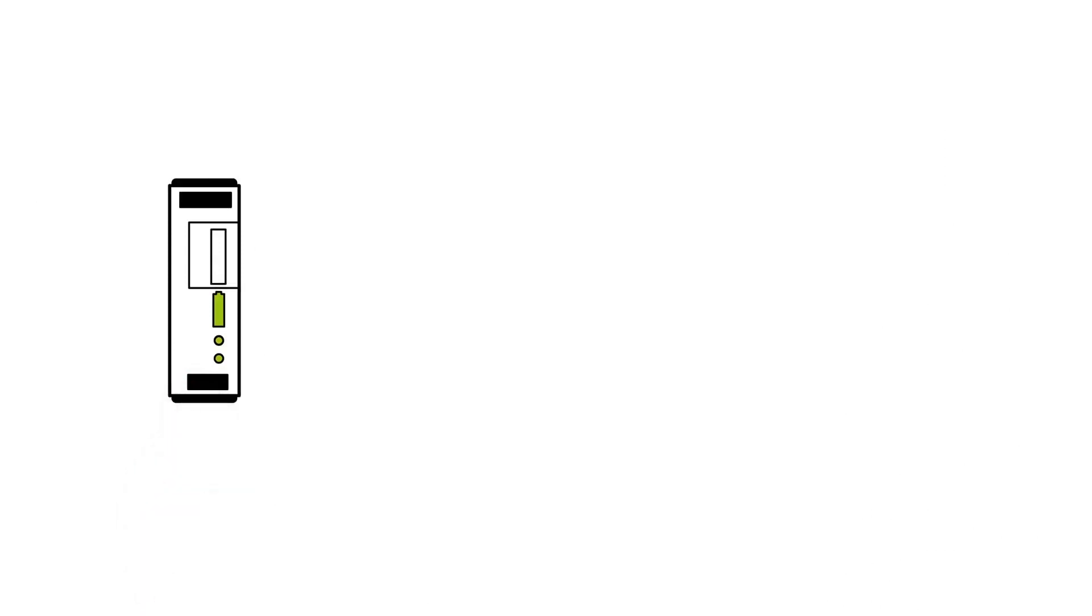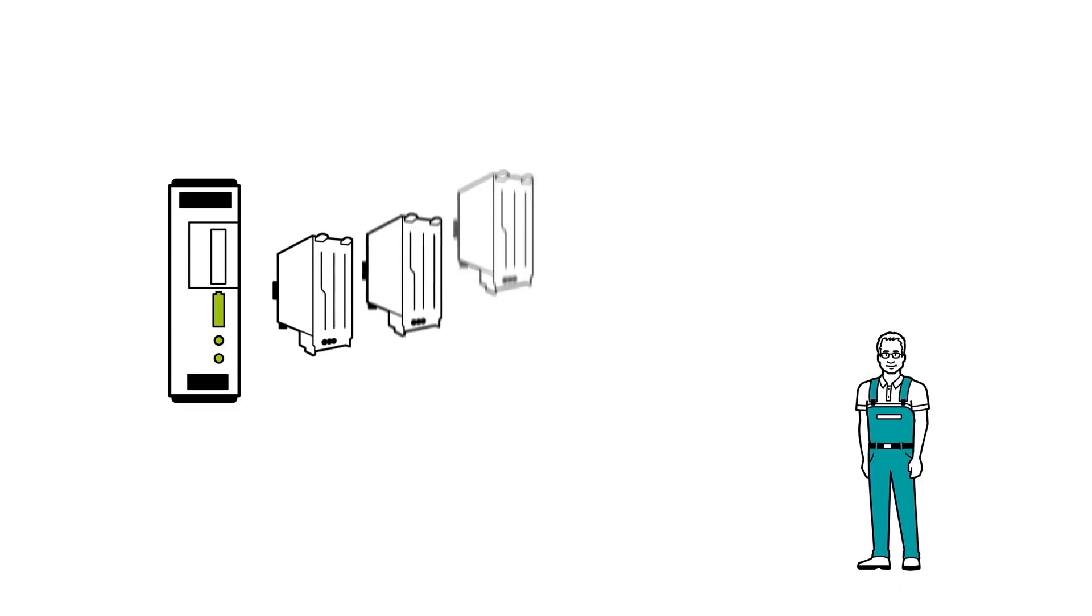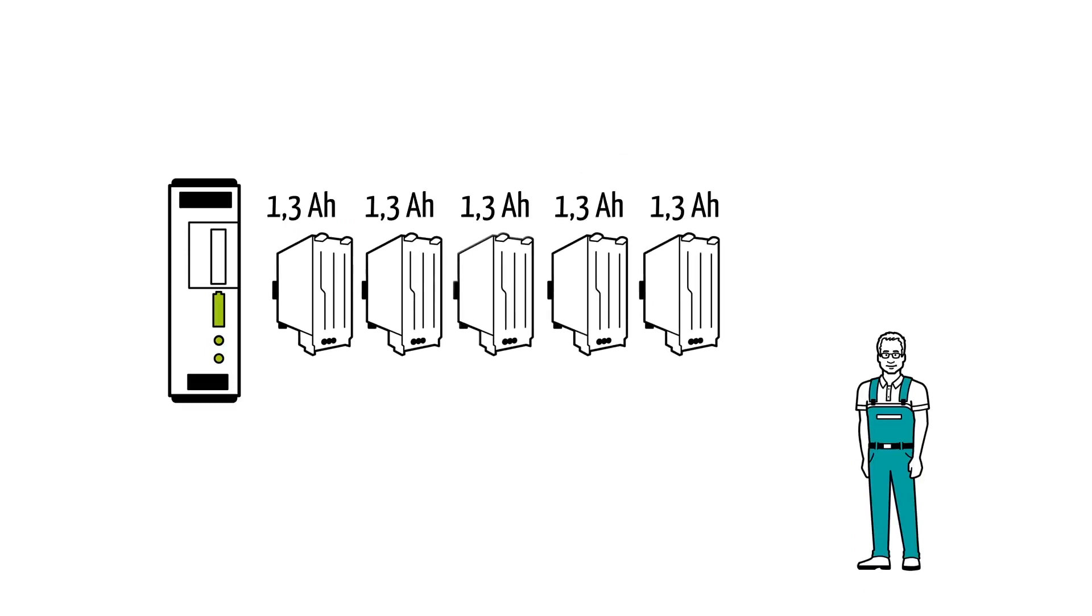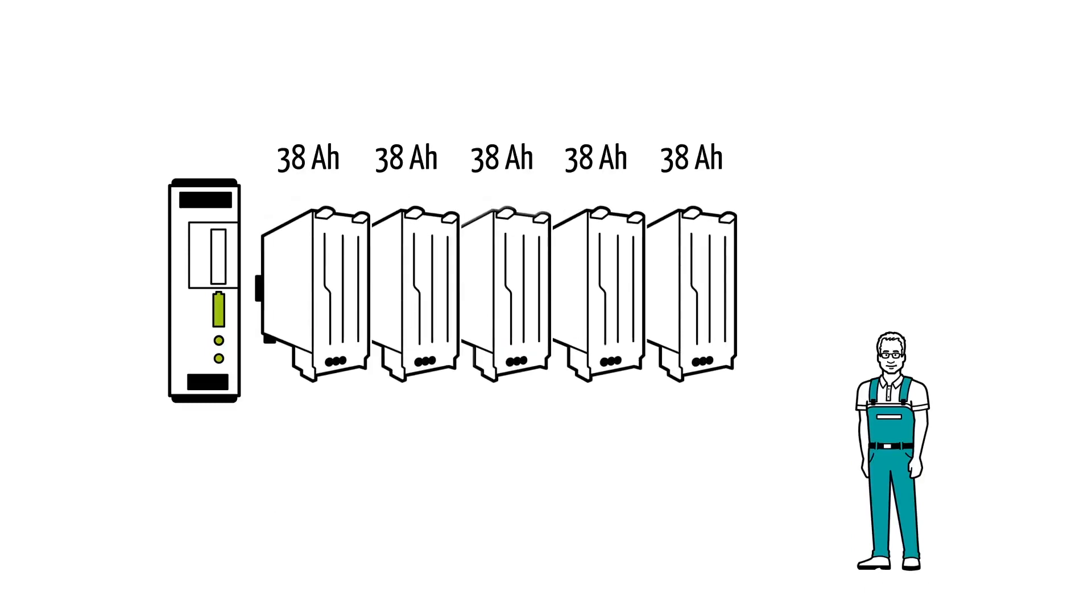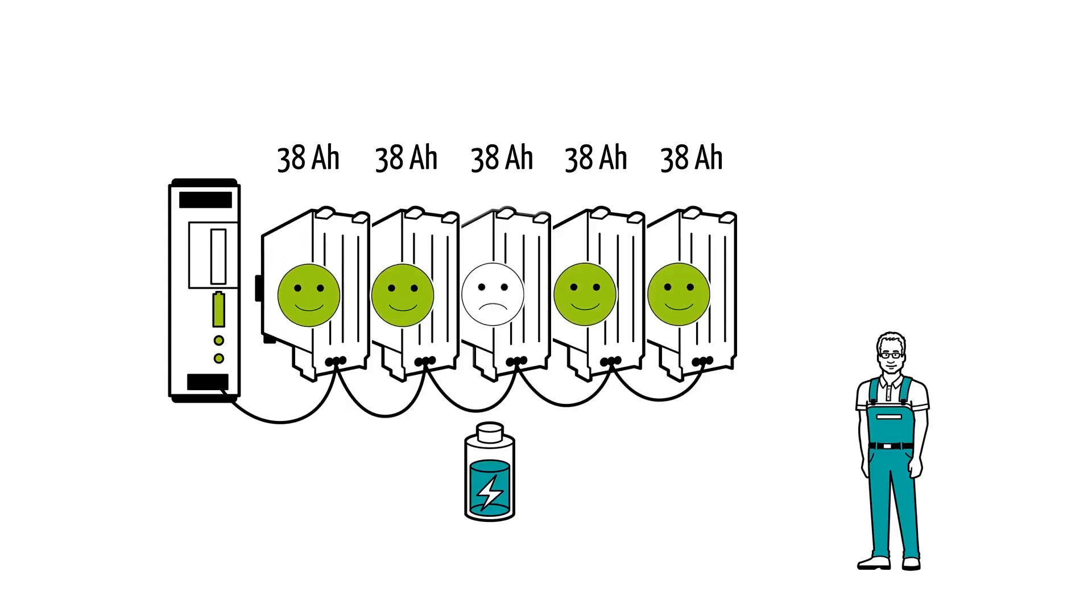Installing QUINT UPS is very easy. Depending on requirements, Mr. Muller can combine up to 5 batteries, each of 1.3 to 38 ampere hours. Furthermore, the QUINT UPS can communicate with the batteries and always know their actual state of charge and the remaining service life of each individual battery.